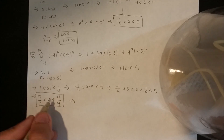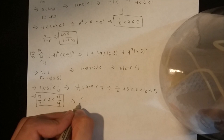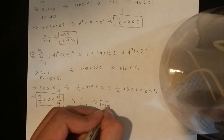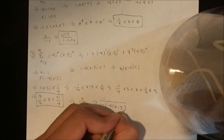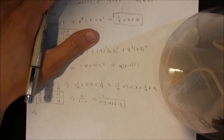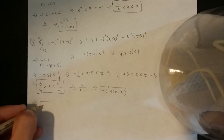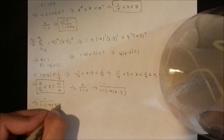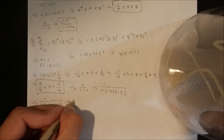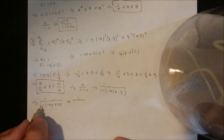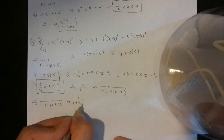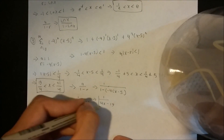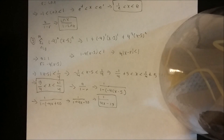Now we want to find the sum of the series for those x values, so we use the formula a over 1 minus r. We said a was 1 and r is negative 4 times x minus 5. So we have 1 over 1 minus negative 4 times x minus 5. Distributing gives us 1 over 1 plus 4x minus 20, which simplifies to 1 over 4x minus 19. And this is the sum of the series for those x values.